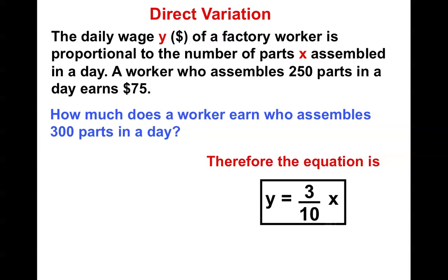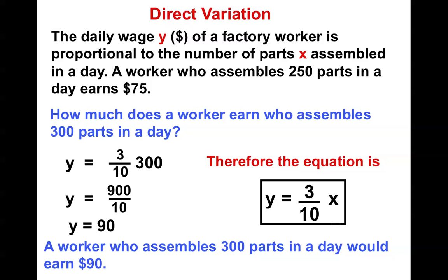How much does a worker earn who assembles 300 parts a day? Well, parts is x. So I simply drop it in. I get 900 over 10, which means $90. So if you assemble 300 parts in a day, you'd earn $90. And you can anticipate how hard to work, depending on how much money you want to have to make.